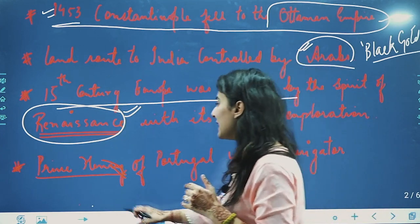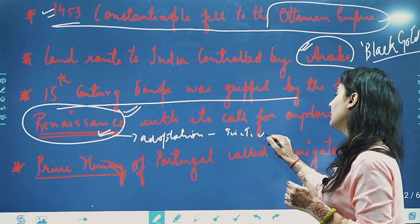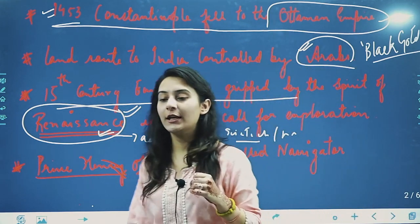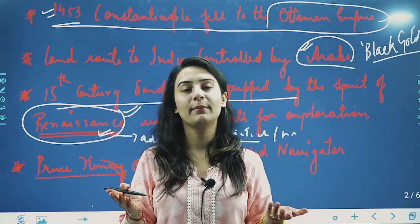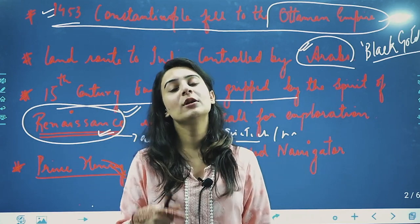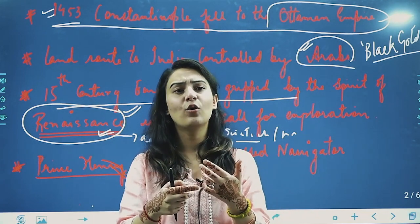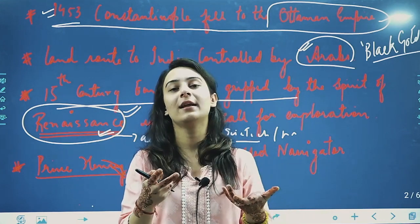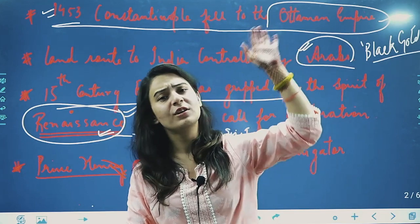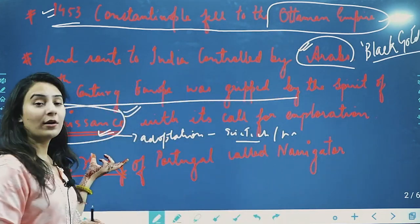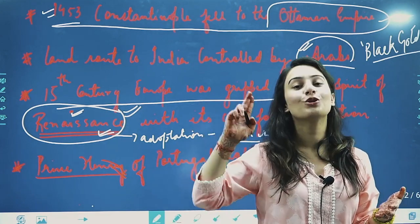Renaissance means the acceptance of science and technology and humanity. Initially, if an earthquake came, a flood came, or a drought came, it was said to be because of your sins. But in the 15th century, when people accepted science and technology, everything was discovered through reasoning — that is called Renaissance. It came in the 15th century in Europe. And there was a need to find a new route for trade.